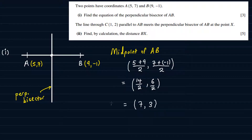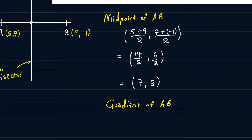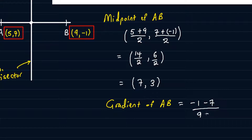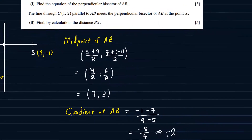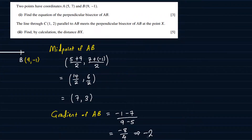We will also need the gradient of AB, as it will help us find the gradient of the perpendicular bisector. So for the gradient of AB, we calculate (−1 − 7) divided by (9 − 5), which gives us −8 over 4, which is −2. So the gradient of AB is −2.